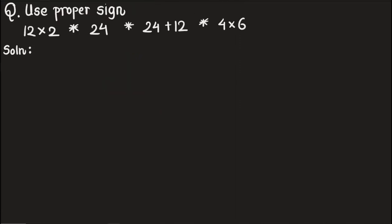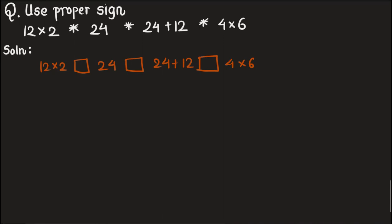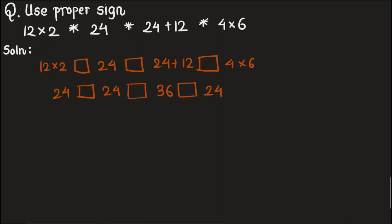The next question asks us to place the correct signs. Writing with a box to avoid confusion with other symbols: the expressions are twelve times two, then twenty-four plus twelve, then four times six. Simplifying: twelve times two is twenty-four, twenty-four plus twelve is thirty-six, and four times six is twenty-four. So twenty-four equals twenty-four, thirty-six is greater than twenty-four, and thirty-six is also greater than twenty-four. Those are our three signs.